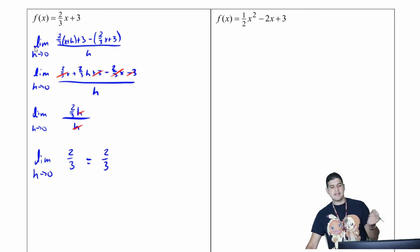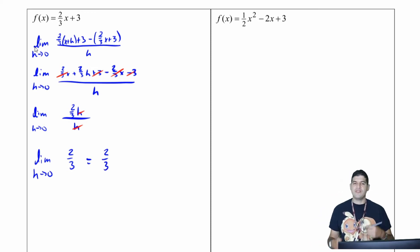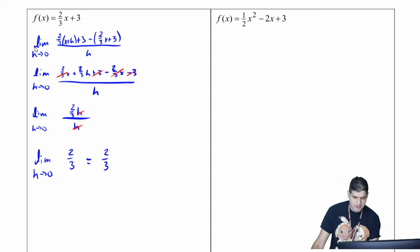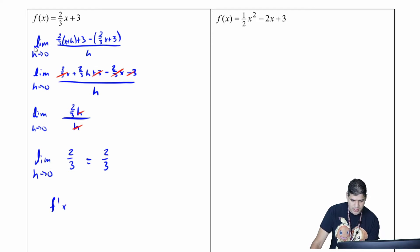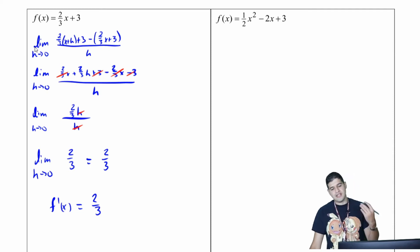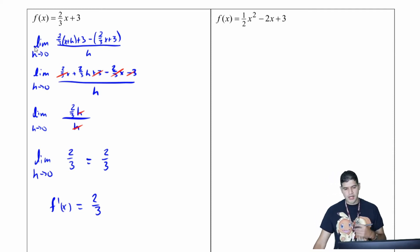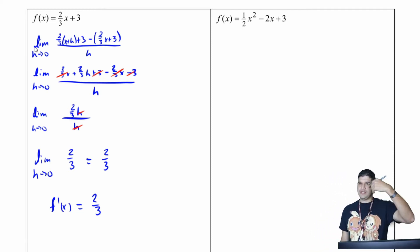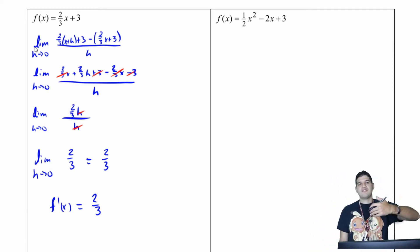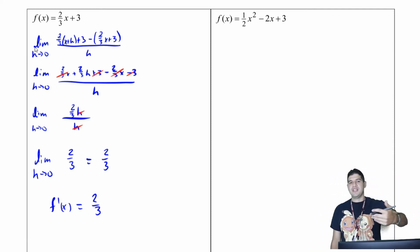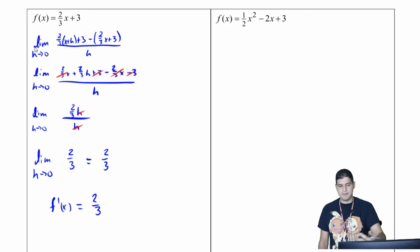So what did we find? We found f prime of x equals two-thirds. You don't want to forget that last part — you're not just finding two-thirds, you're finding the derivative f prime.